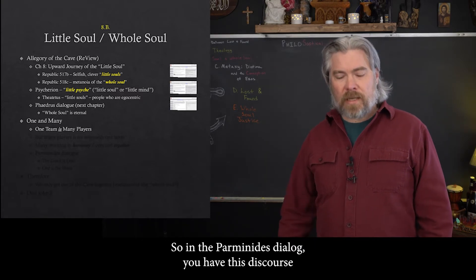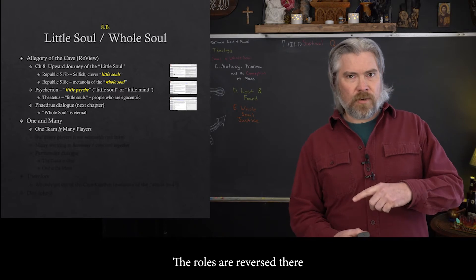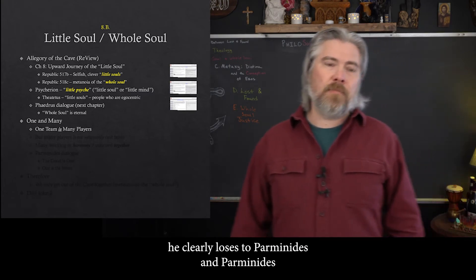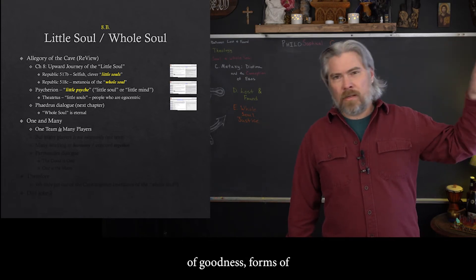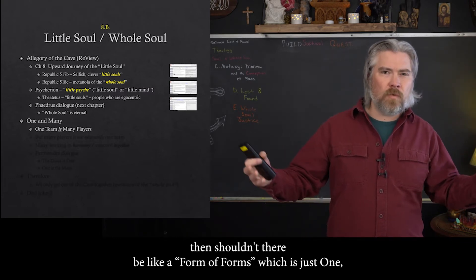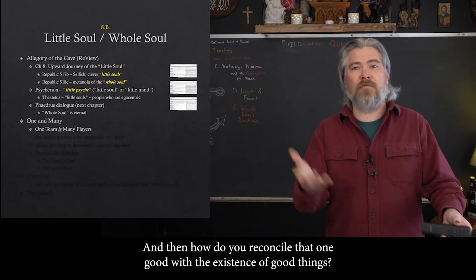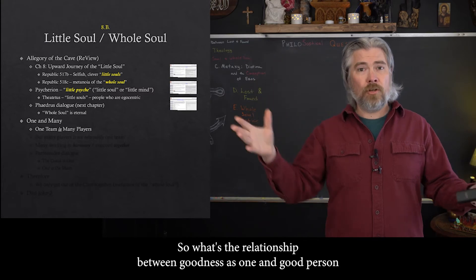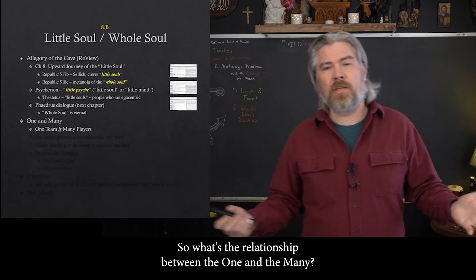I want to talk briefly about the Parmenides dialogue, since we're not looking at that text this semester but it's still important. In the Parmenides dialogue, you have this discourse between Socrates and Parmenides — the roles are reversed here; usually Socrates kind of wins these discourses, but in that one he clearly loses to Parmenides. Parmenides argues that if you're trying to talk about these forms — forms of goodness, justice — then shouldn't there be a form of forms, which is just one? Shouldn't there just be one form that is good? And then, how do you reconcile that one good with the existence of good things or beautiful people? What's the relationship between the one and the many?